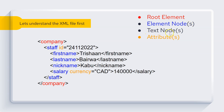Then we have text nodes. Whatever you see in black color — Trishan, Barwa, Kabu, and the amount — all these are known as text nodes. Then we have one more component called attribute. Here ID is an attribute, and currency is another attribute. I hope this is clear. Let's move.